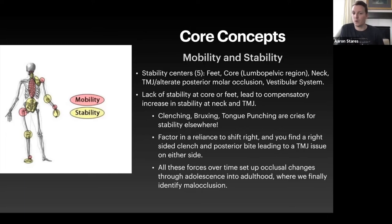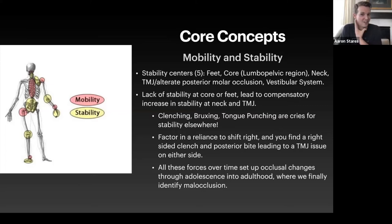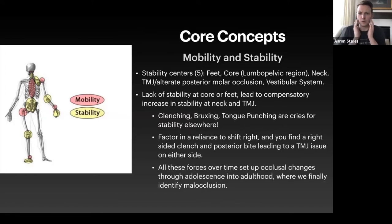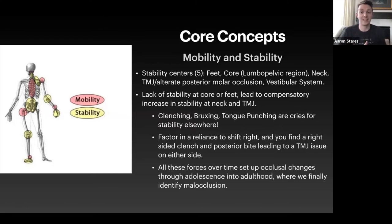If we have this right-sided shift and a lack of core stability, we're going to use our right jaw to clench and create bruxism — an overused masseter, temporalis, or sternocleidomastoid. All of this tenses because we're typically shifted onto our right side. Over time, these forces set up occlusal changes throughout adolescence to adulthood where we finally identify malocclusion when the patient walks into the office with TMJ pain, neck pain, or headaches. We need to make sure we understand everything underneath before treating.